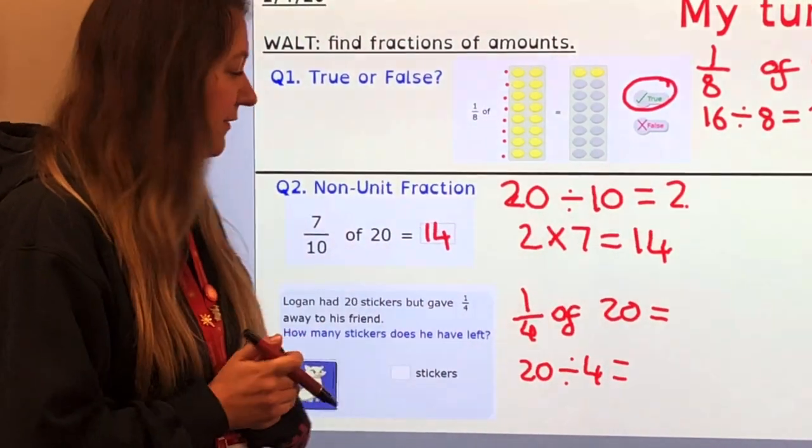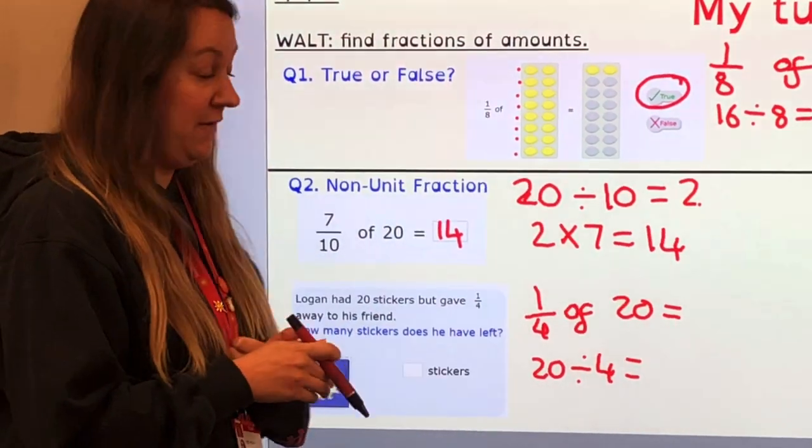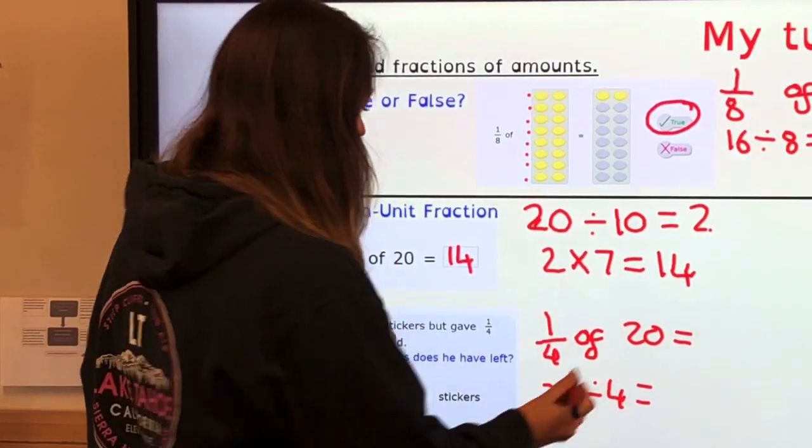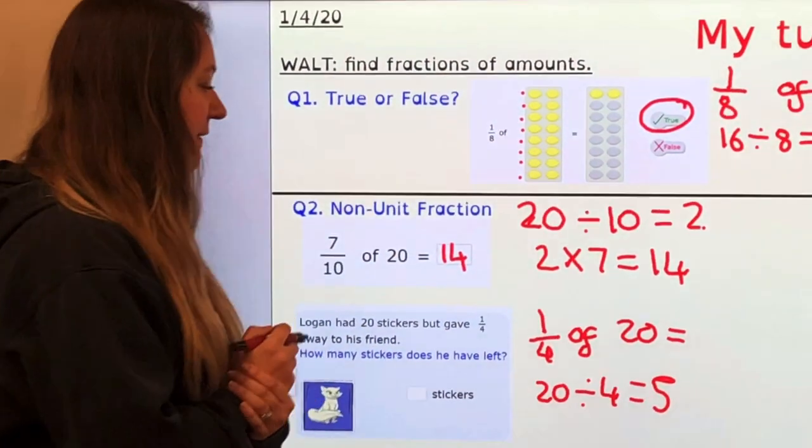I'm going to count in 4s. 4, 8, 12, 16, 20. 5. So he gave 5 away.